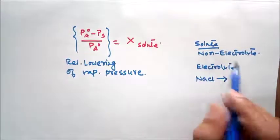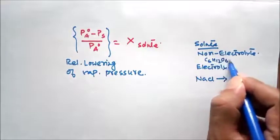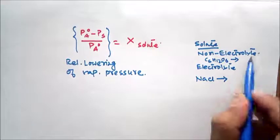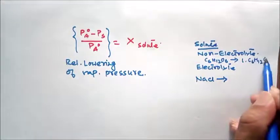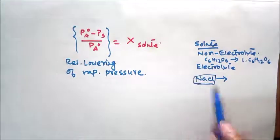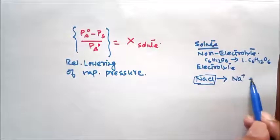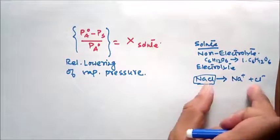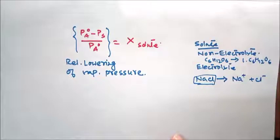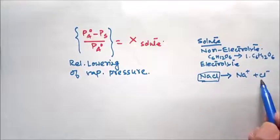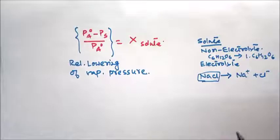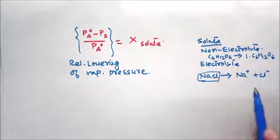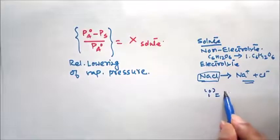A non-electrolyte such as glucose will not dissociate, so it gives one molecule per formula unit in the solution. But when you dissolve an electrolyte like sodium chloride, it dissociates into sodium ion and chloride ion — the number of particles in the solution becomes 2 from 1. So for such solutes the number of particles increases. There are also some solutes where association occurs instead of dissociation.